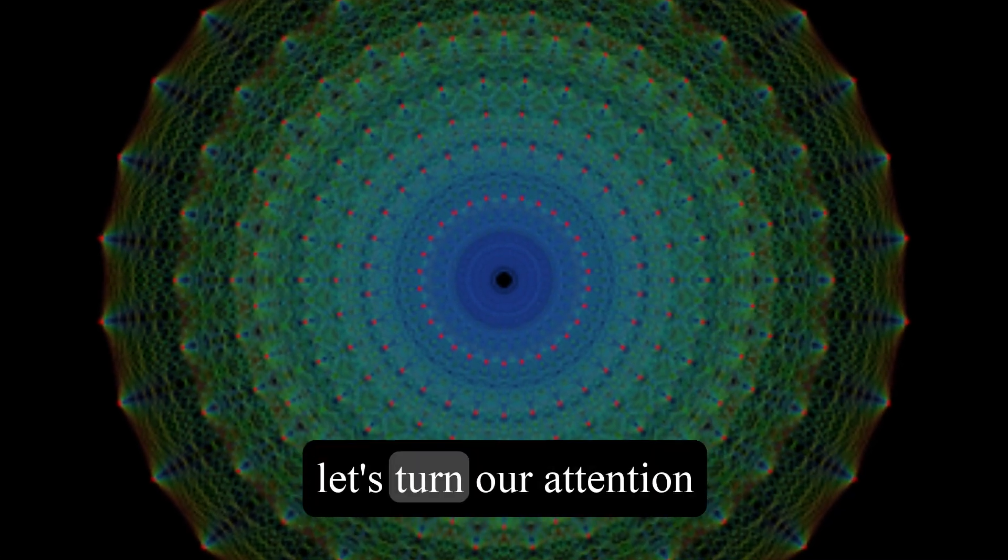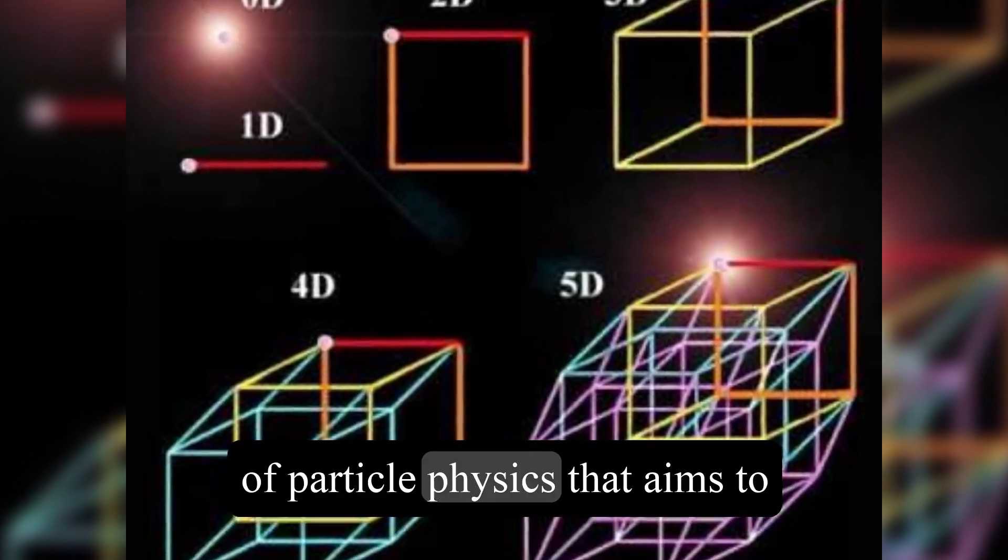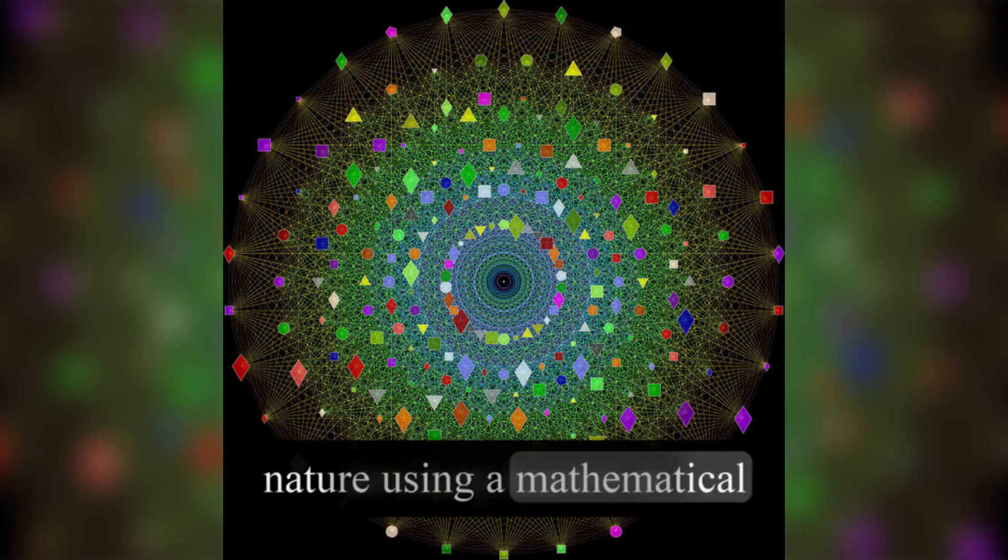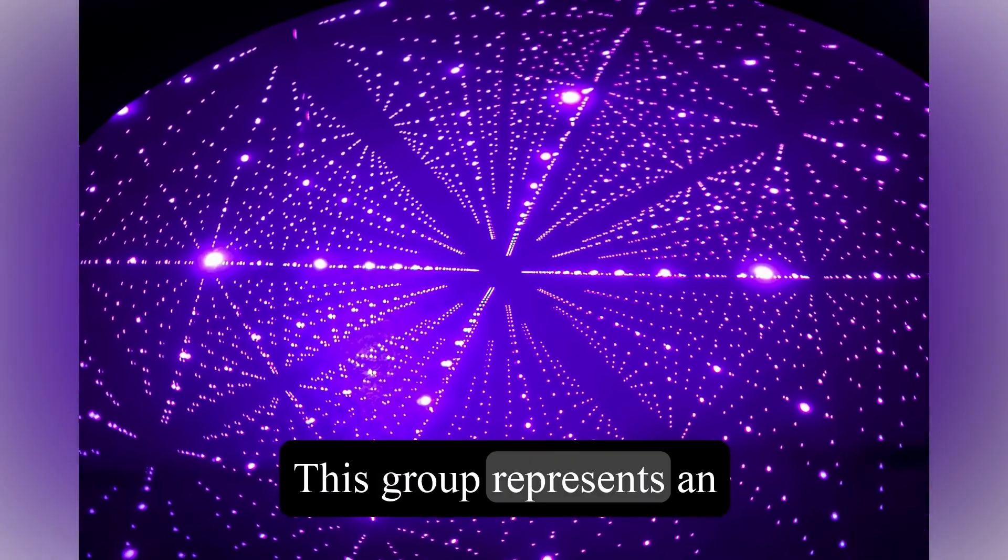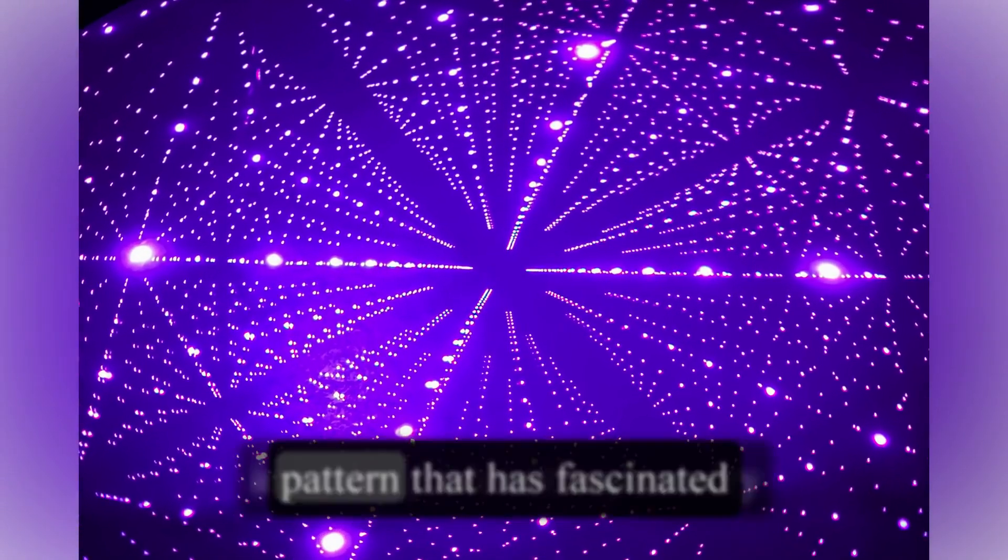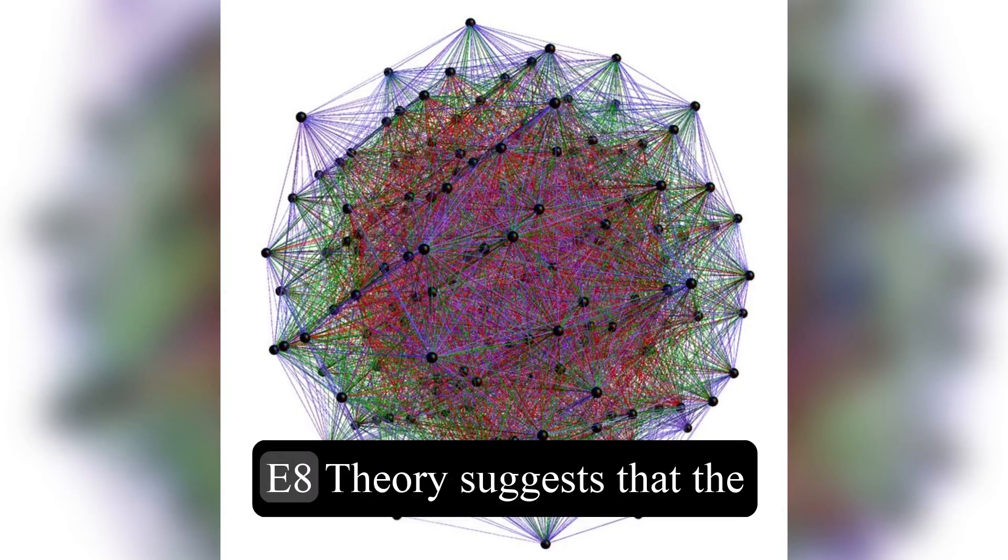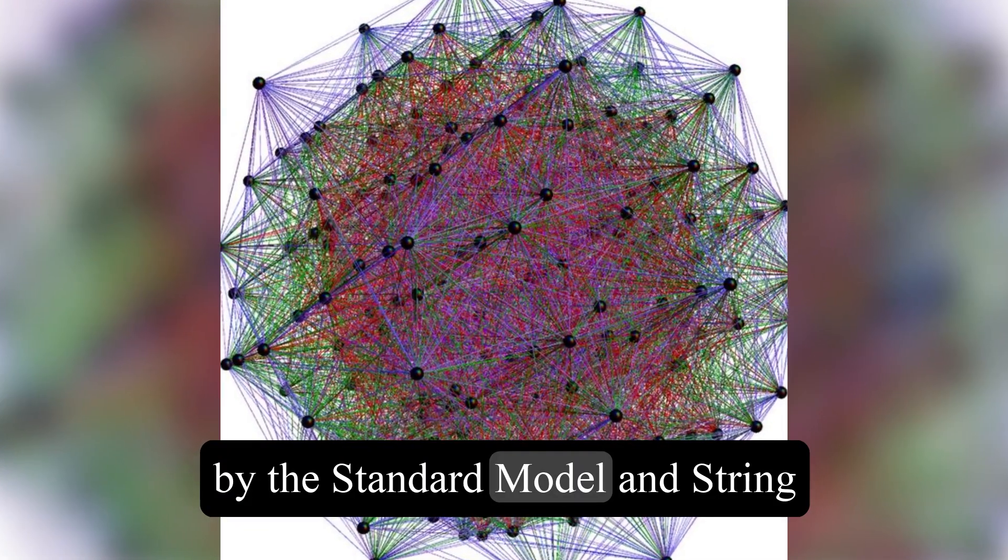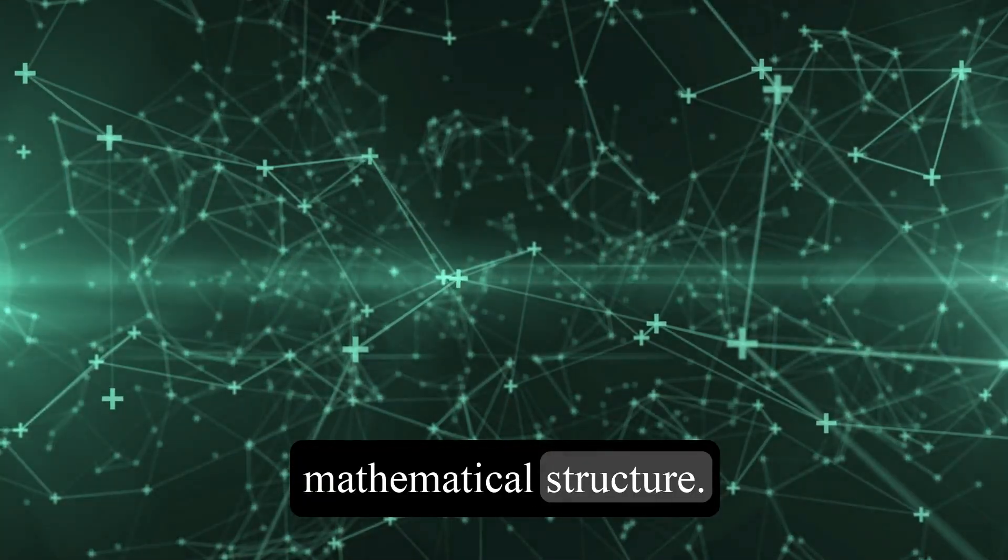Now, let's turn our attention to E-8 theory. E-8 theory is one of the branches of particle physics that aims to unify the fundamental forces of nature using a mathematical structure known as the E-8 Lie group. This group represents an incredibly intricate symmetry pattern that has fascinated physicists for decades. E-8 theory suggests that the particles and forces described by the standard model and string theory can be derived from the interactions within this mathematical structure.